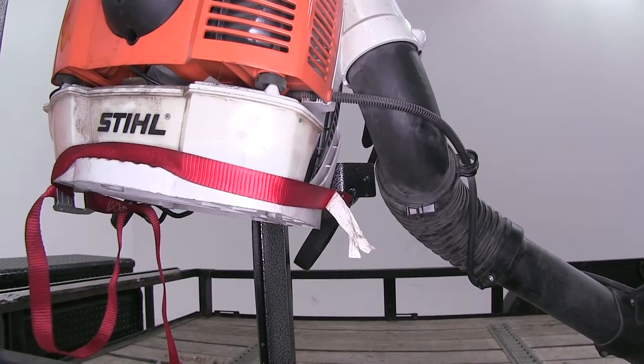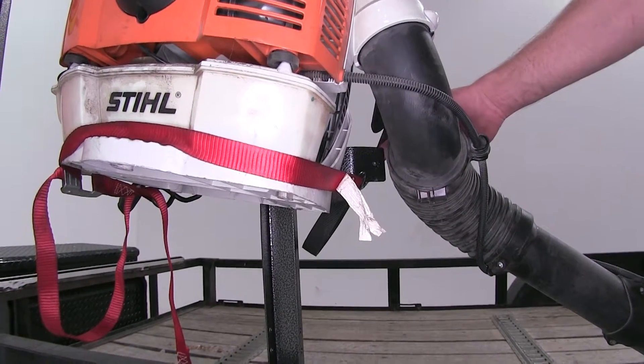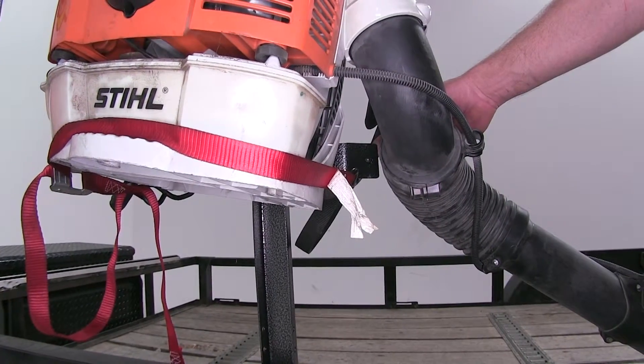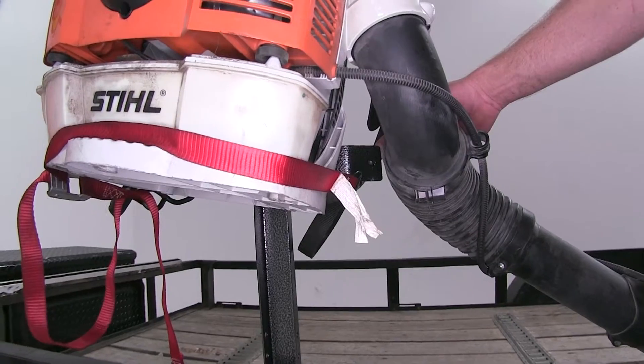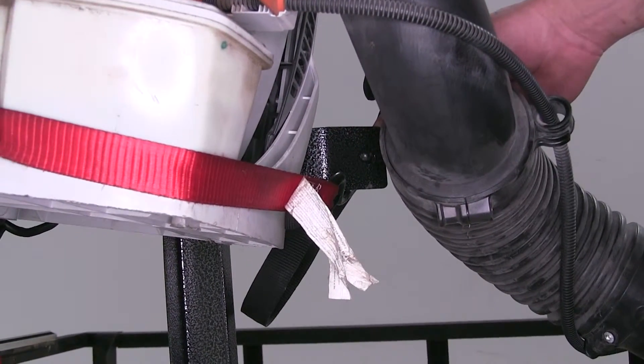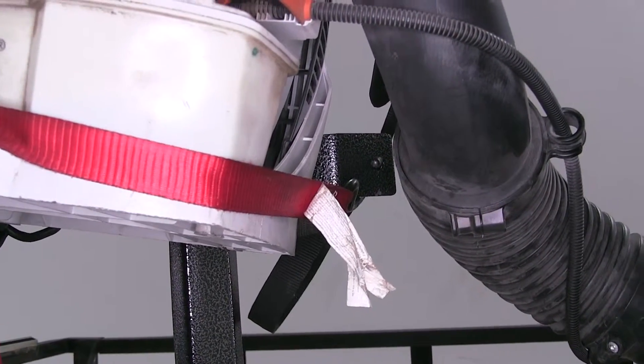While our top hook is providing the security for keeping our blower in place, the bottom mount has pre-drilled holes on each side that will allow you to use a securing fastener, whether it's a ratchet strap, pull strap, or even a bungee cord, so that it holds the bottom of the blower tight to the upright rail in the mount so it doesn't swing around when traveling down the road.